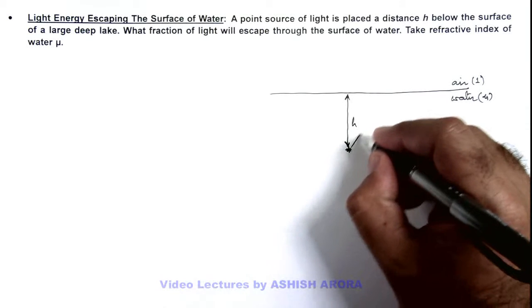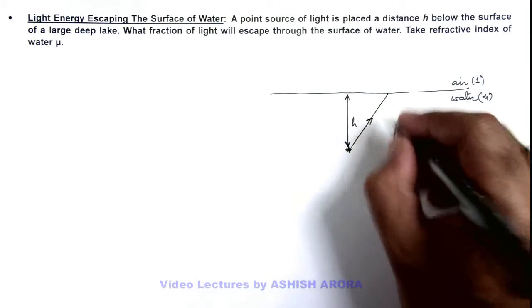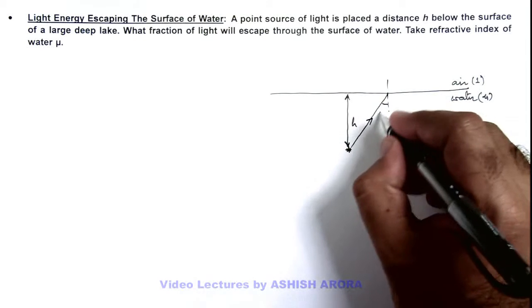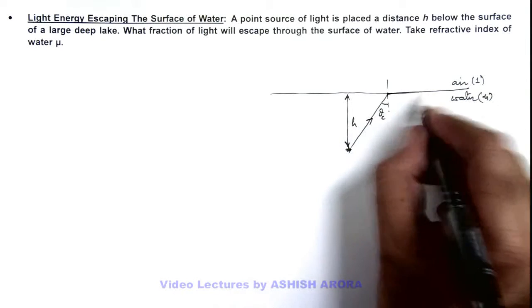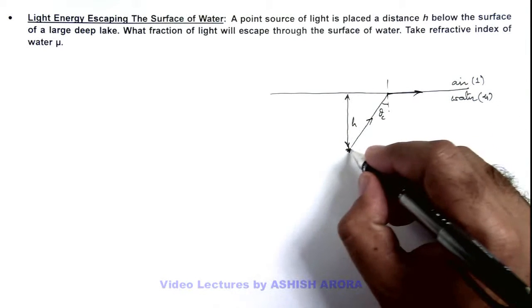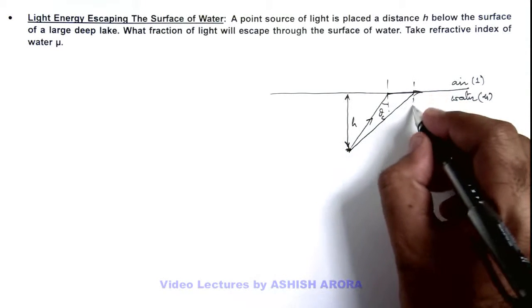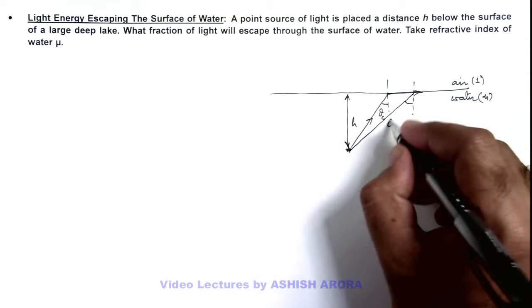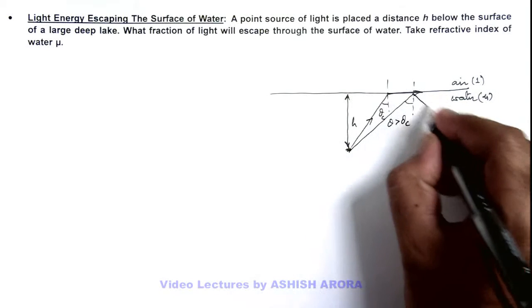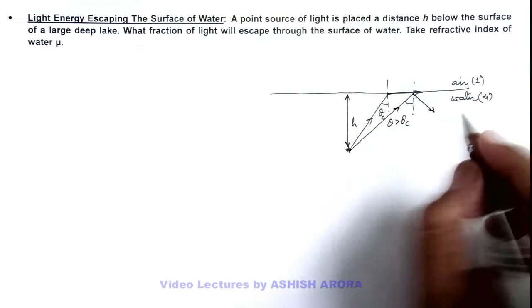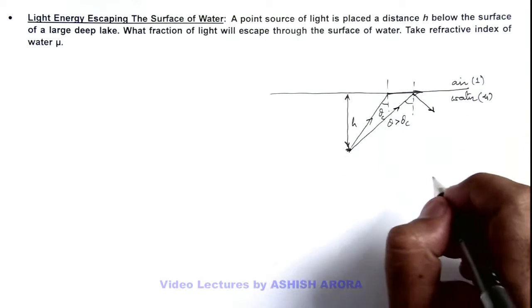We know well that the light rays which will incident on this water at an angle equal to critical angle will graze along the surface. And all the light rays which are falling on the water surface at an angle theta greater than critical angle will be reflected back, as total internal reflection takes place.